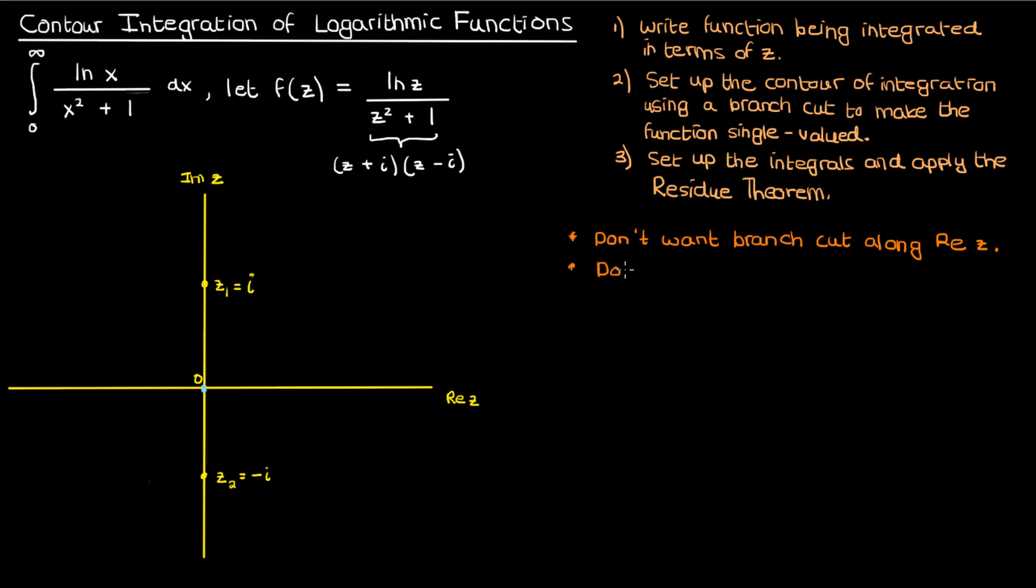In addition we don't want our branch cut such that our contour goes through any of our poles. If it does we can't use the residue theorem. The residue theorem just doesn't work if the contour has poles on it. Only when the poles are inside the contour does the residue theorem apply.